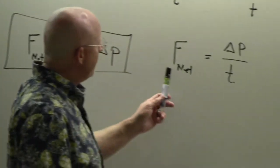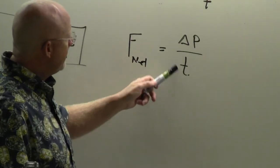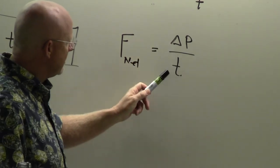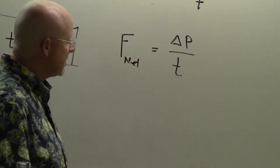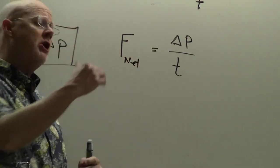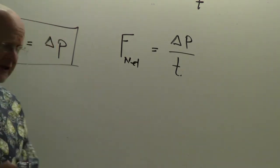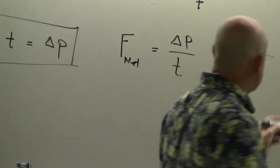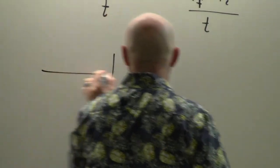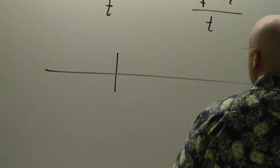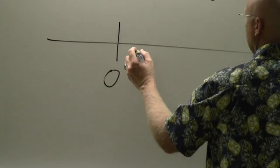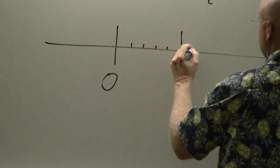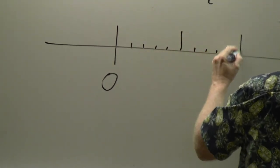There are two factors: the change in momentum and the time. The collision time for each ball is roughly the same. To understand this, look at a number line: zero, one, two, three, four, five, six, seven, eight, nine, ten.